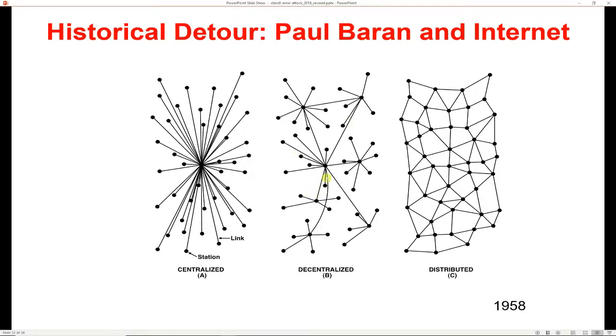He then also considered what he called a hierarchical structure of stars connected in the form of a larger star. This is what we refer to today as a hub and spoke network. And it's very close to what we would call a scale-free network today. He also thought that this would be a little too susceptible.